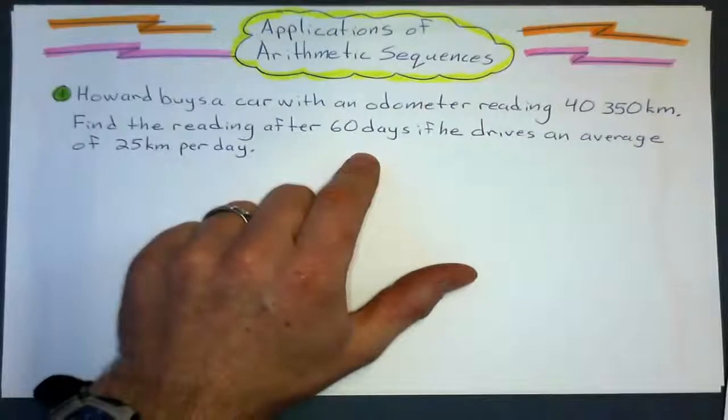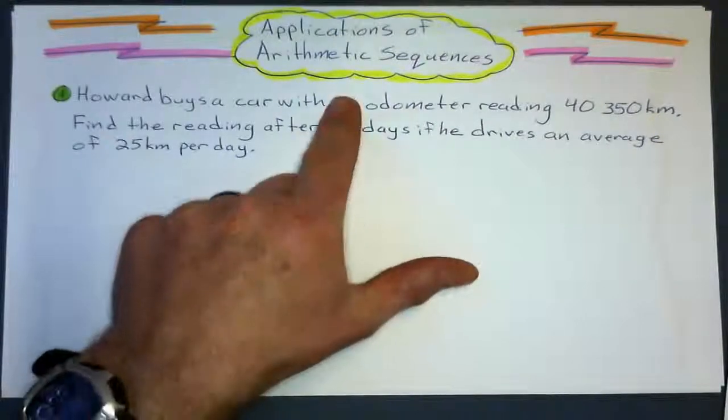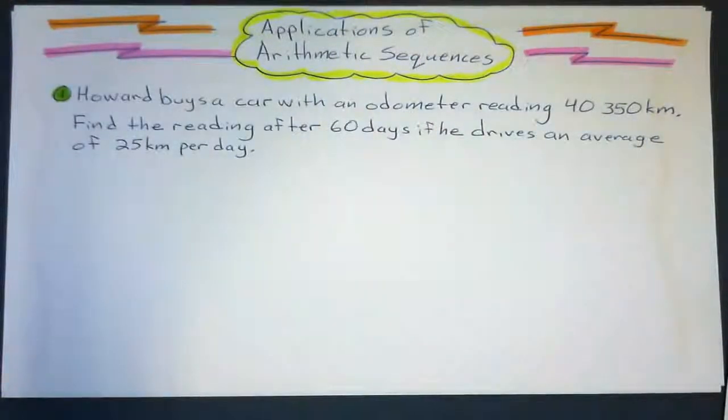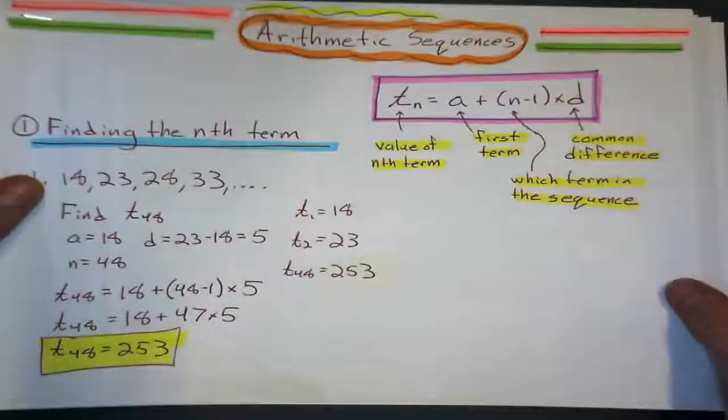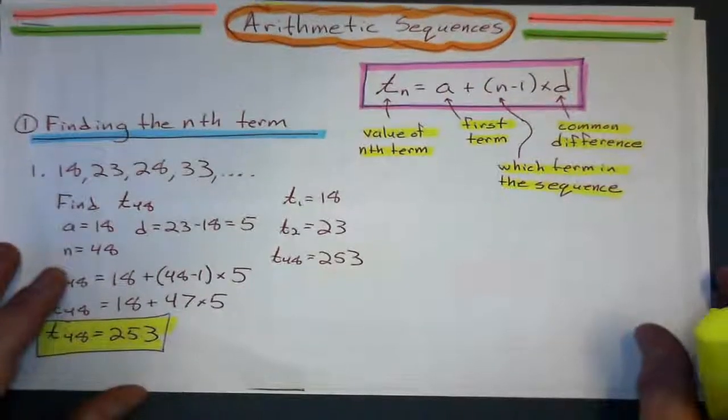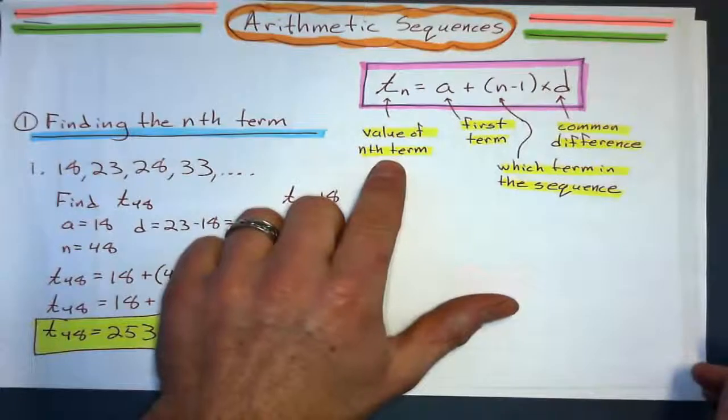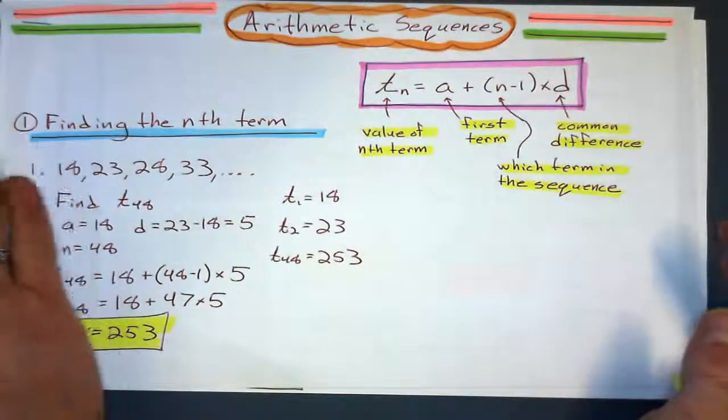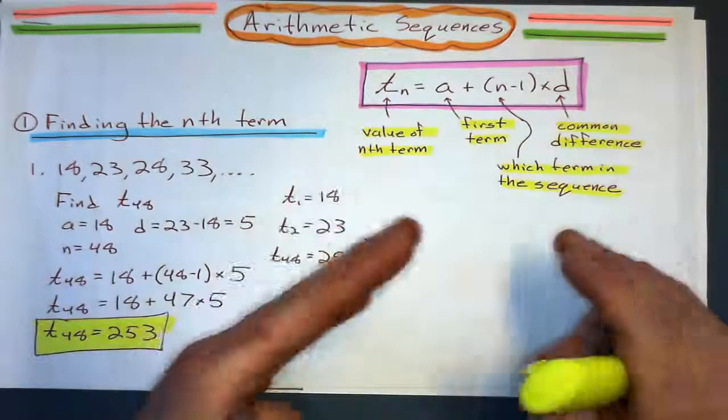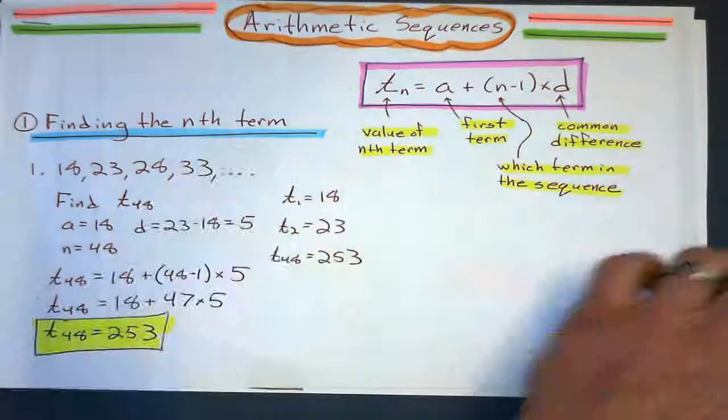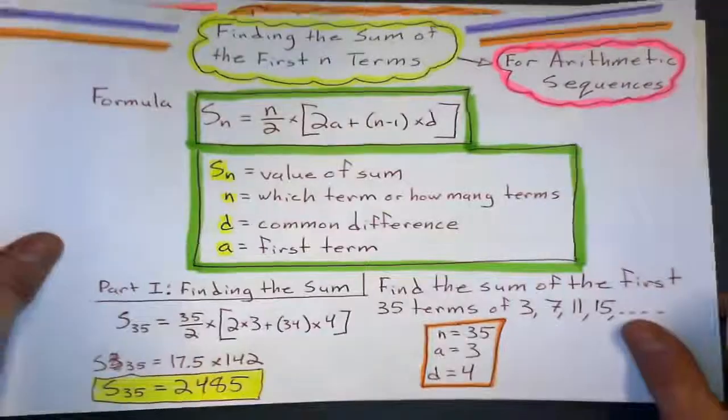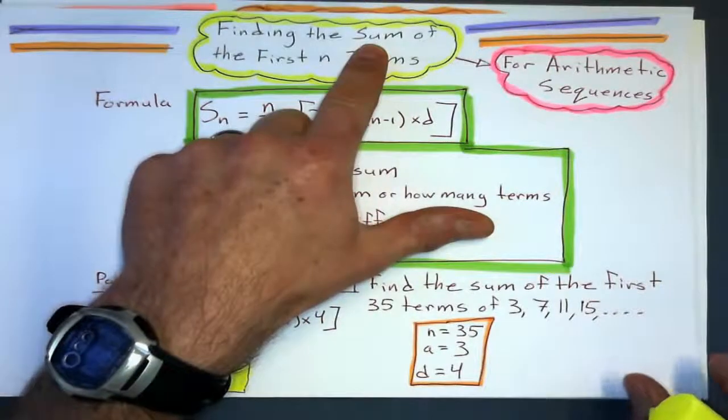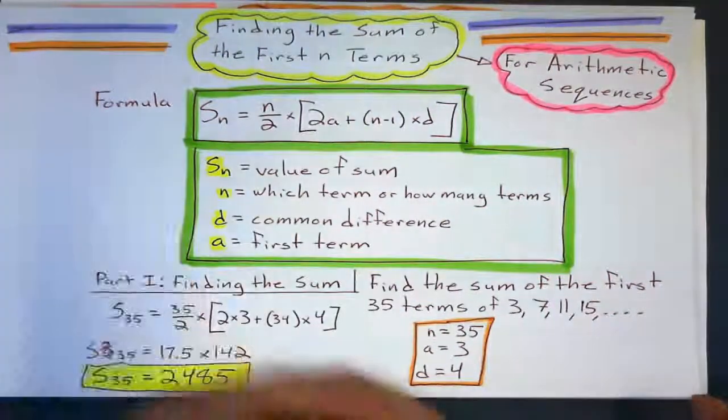Okay, so for applications of these arithmetic sequences, we basically have to figure out two things. We want to know, is it asking us a question where we want to find one of the general terms? Or is it going to be something to do with the sum? So these are the two notes we've done so far.